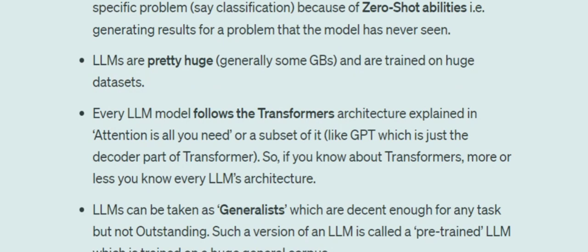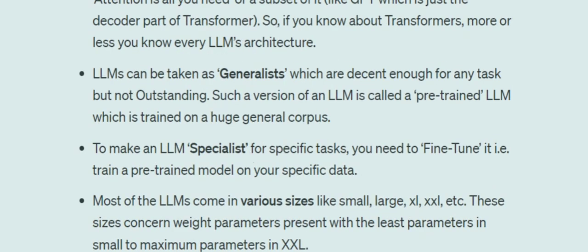LLMs we commonly use, like ChatGPT based on GPT-3.5, are generalist models — decent enough to do any random task. Ask about travel itineraries or math problems and you'll get decent but not outstanding results. This kind of 'jack of all, king of none' LLM is called a pre-trained LLM, trained on a general corpus. If you want outstanding results for a specific problem like a classification task targeting 99% accuracy, you need to fine-tune it — retrain the model on your specific data.